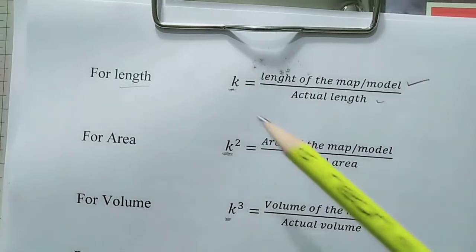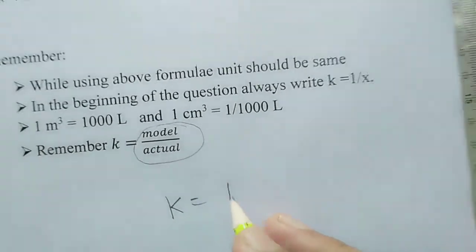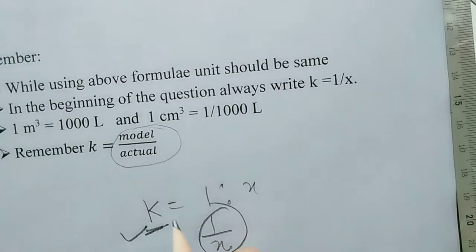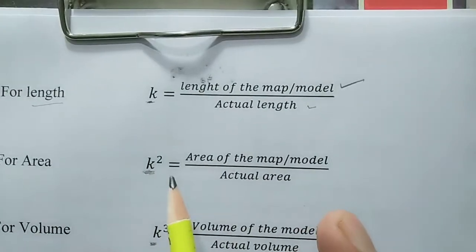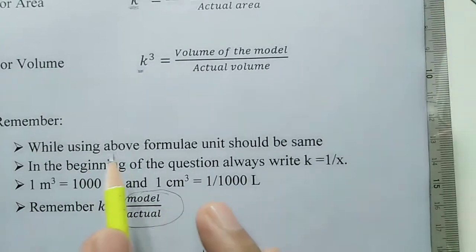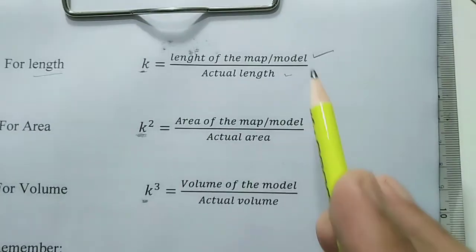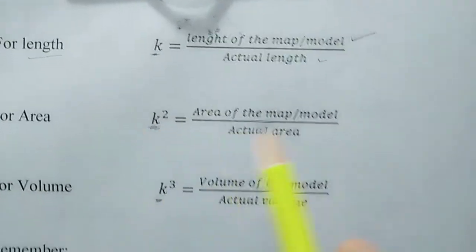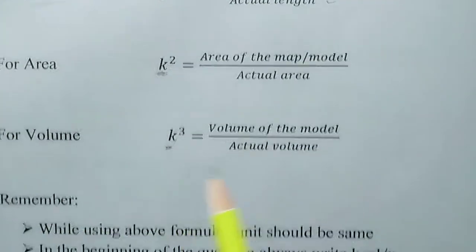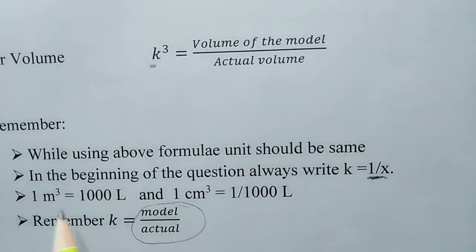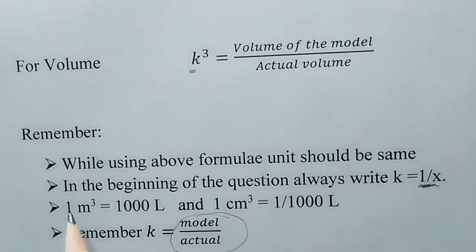While doing the question, first recognize your k. Your k will always be given in the form of 1 ratio x or 1 upon x. Write the scaling factor k first. If comparing length, apply the length formula (k); if comparing area, use k squared; if comparing volume, use k cubed. Important: when using these formulas, units must be the same. For length comparisons, both map and actual lengths must be in the same unit — either centimeters or meters. Always write k at the beginning of the question.